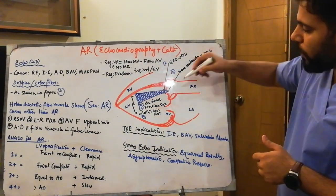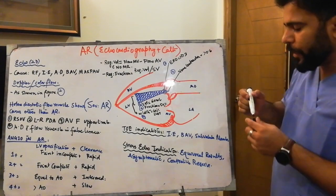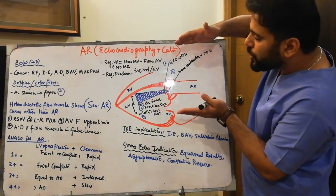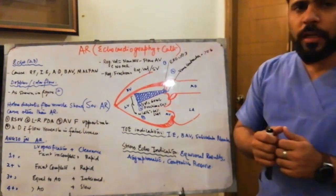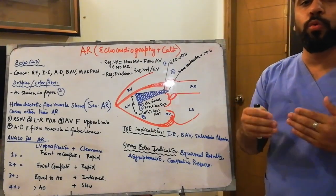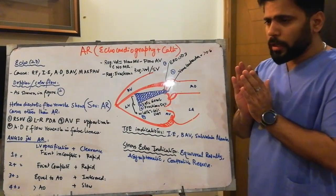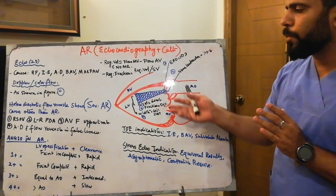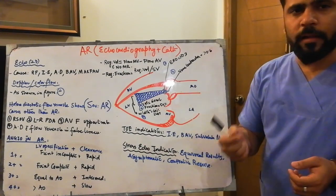You can also appreciate a flap in the aorta, indicating aortic dissection causing secondary AR. A large aorta in Marfan syndrome or bicuspid aortic valve can also be identified. By looking at the 2D images of AR patients, you can make a definitive diagnosis and identify the underlying cause of AR from the two-dimensional echocardiographic views.